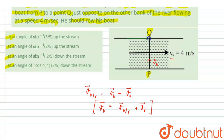If we place the river velocity vector Vr parallel in this direction, this is the Vr or Vs vector. The velocity of stream or velocity of river is Vr. This is the Vb vector — velocity of boat with respect to ground. To apply the vector addition law, we complete the triangle, and the direction of the velocity of boat with respect to river is determined accordingly.